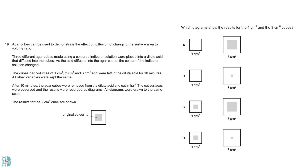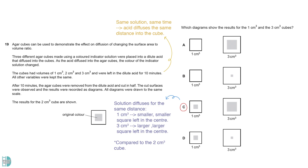When the cubes are left in the same solution for the same time, the acid diffuses the same distance into the cube. C is the only one showing the correct distance of movement. In addition, since 1 cm³ is smaller and 3 cm³ is larger, the square in the center appears to be smaller and larger compared to the 2 cm³ shown in the diagram above. A is incorrect because it indicates that the movement of acid exceeds what we expected.